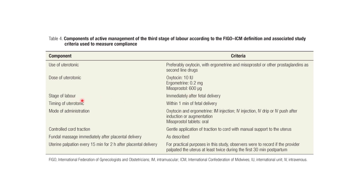Uterotonics are usually given immediately after fetal delivery — ergometrine or Methergine may be given after shoulder delivery. Timing is within 1 minute of fetal delivery. Oxytocin and ergometrine can be given IM or IV. Misoprostol can be given orally. Controlled cord traction and fundal massage to stimulate uterine contraction are also components. Palpate the uterus every 15 minutes for 2 hours after placental delivery.